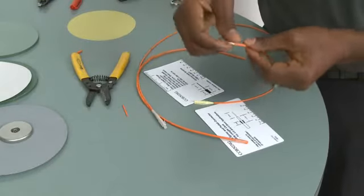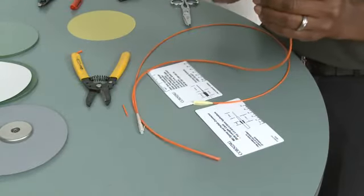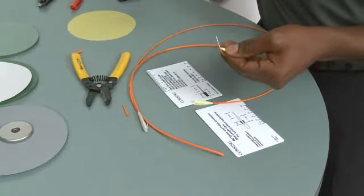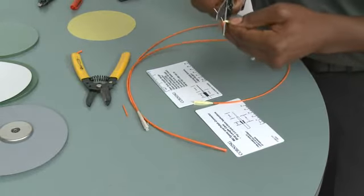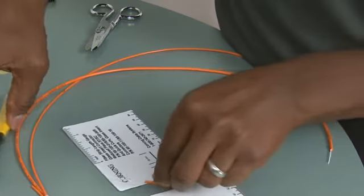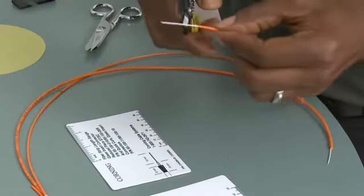After this point, remove the aramid yarn using a pair of snips, and then use the buffer stripping tool to remove the jacketing at the second mark.